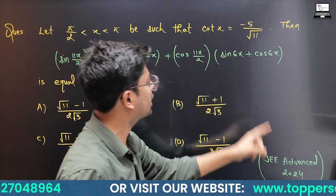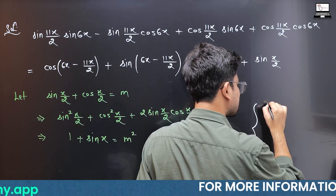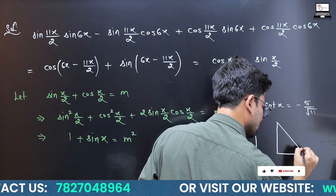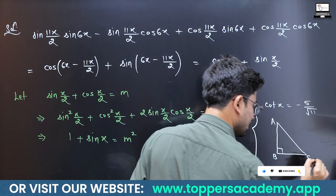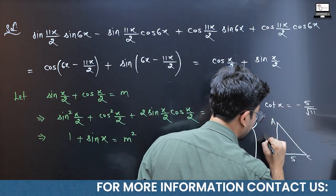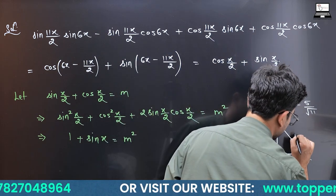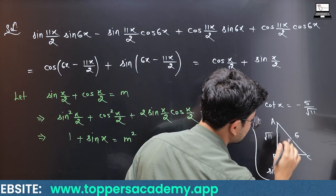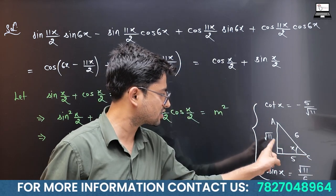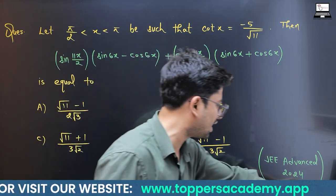We know cot(x) = −5/√11. Drawing a right triangle: base = −5 (negative because x is in the second quadrant), perpendicular = √11, so hypotenuse = √(11 + 25) = √36 = 6. Therefore sin(x) = √11/6, which is positive since sine is positive in the second quadrant.